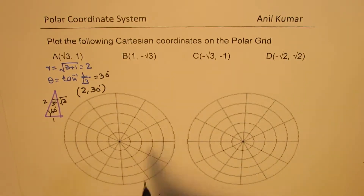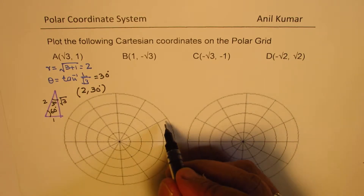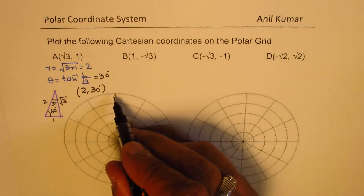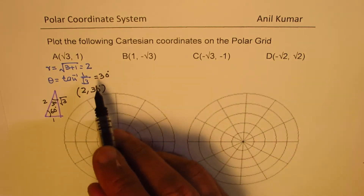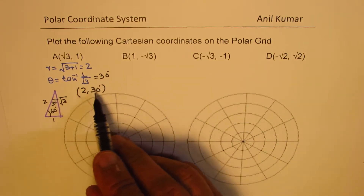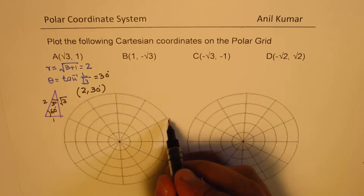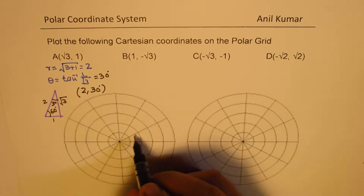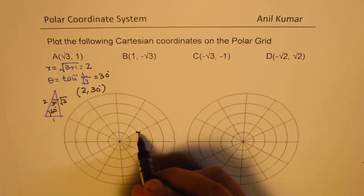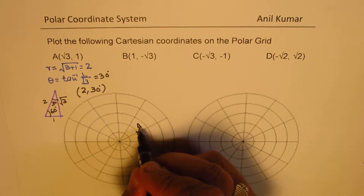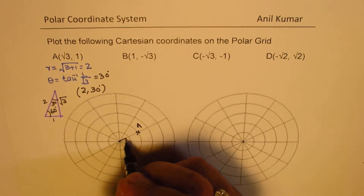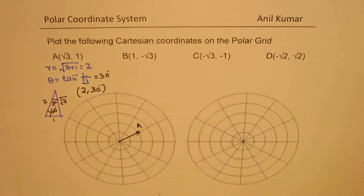On the polar grid, we have 30, 60, 90 degree markings. So at r = 2 and 30 degrees, we plot between the 1 and 2 unit circles — that becomes point A for us. That is the method of finding the point.